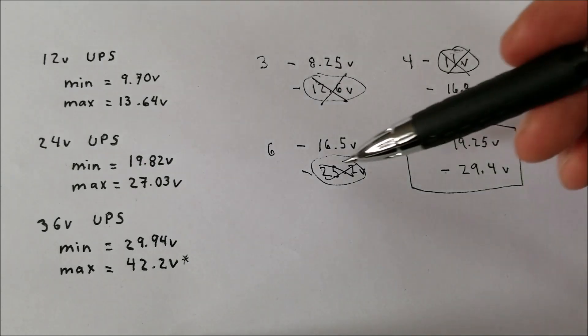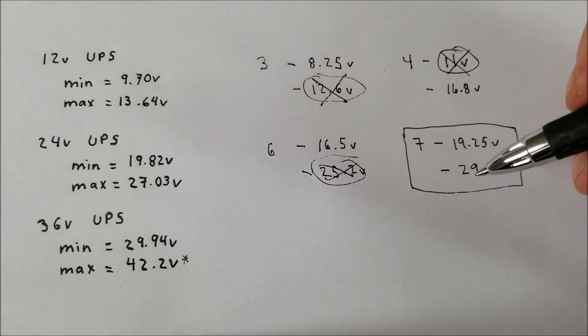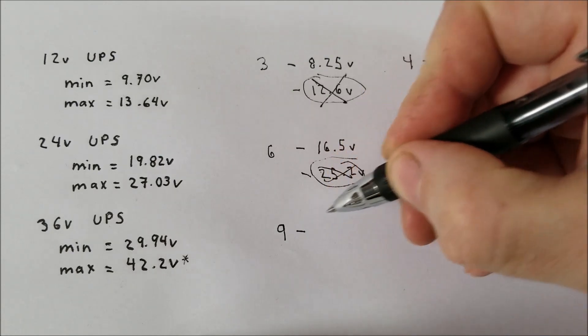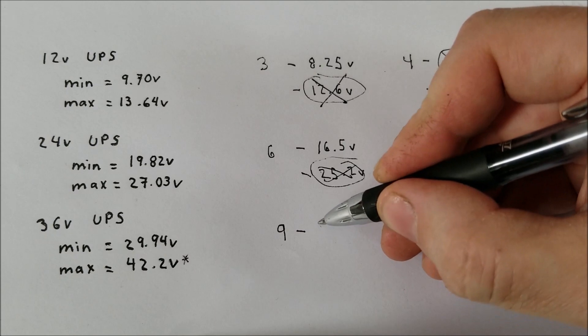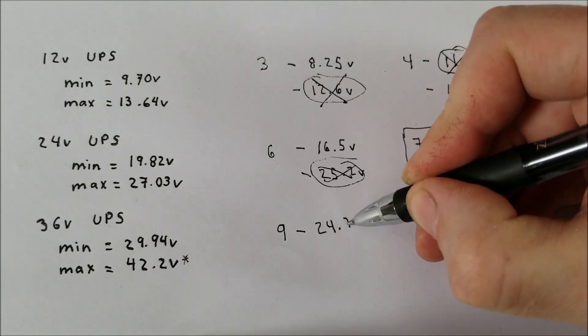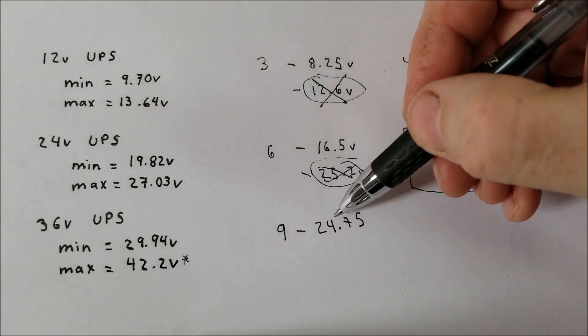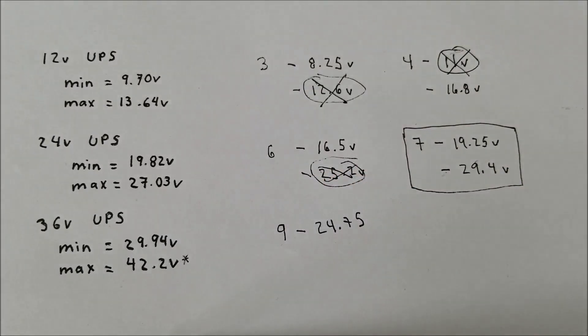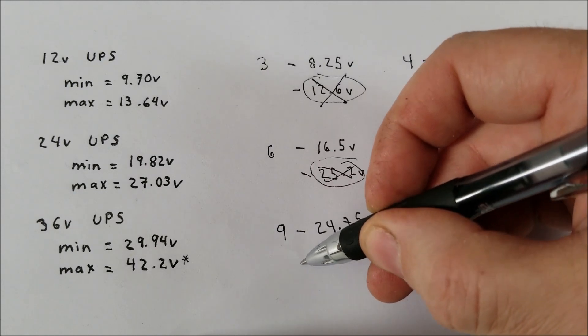Now let's move on to the 36V UPS. So if we go with 9 cells in series times 2.75V again, we get 24.75V for the minimum. So this is obviously lower than the 29.94V, so we're good. Now we do 4.2 times 9 to get the maximum.